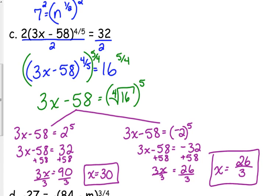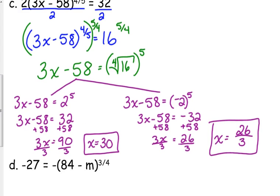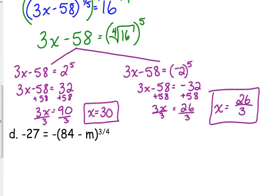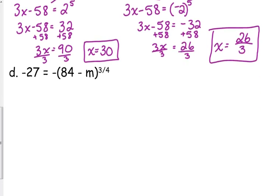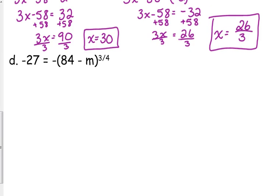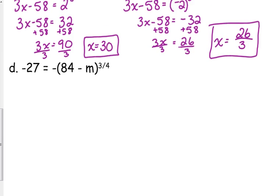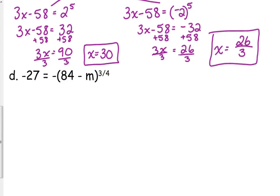So if it's an even root, you have to consider positive and negative, and then apply the exponent. If it's an odd root, you don't have to worry about that, a.k.a. our next problem right here. So negative 27 is equal to negative 84 minus n to the 3 fourths. Again, that negative, you don't distribute it. You've got to move it to the other side.